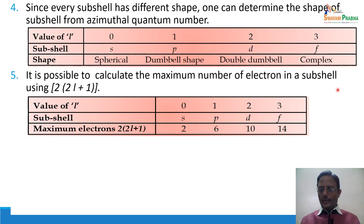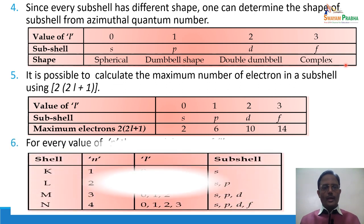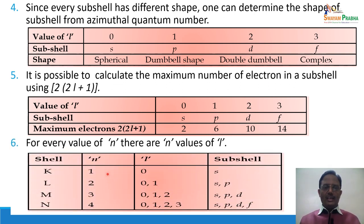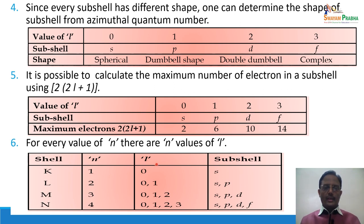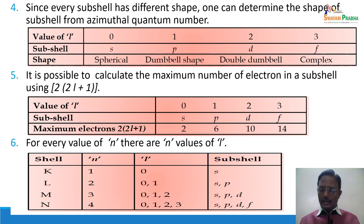For any value of n, l has n values ranging from 0 to n−1. For n = 1, l has only one value (0), so K shell has one subshell S. For n = 2, l has two values (0 and 1), so L shell has two subshells S and P. Similarly, M shell has three subshells and N shell has four subshells.